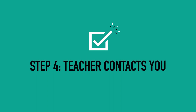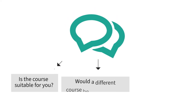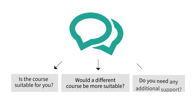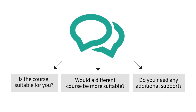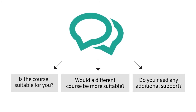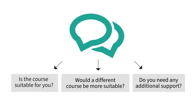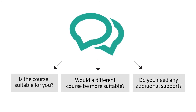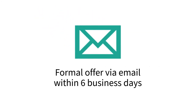Step 4: Teacher contacts you. We will be in touch to organise a time to ask any questions needed to finalise your application. On the call, Zoom or in-person meeting, they'll give you a verbal indication of whether the course is suitable for you. And if not, suggest a more suitable course or include additional support. Within six business days, if your application is successful, you will receive a formal offer via email.